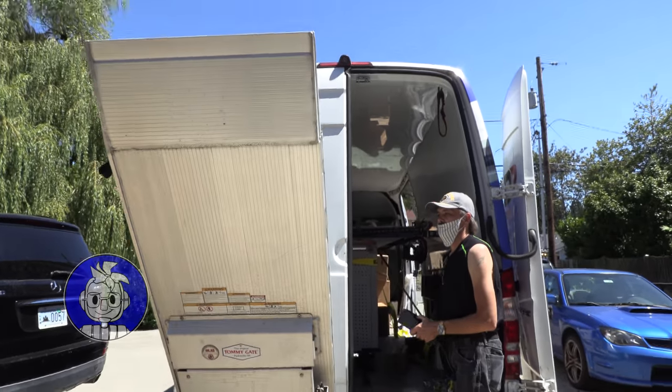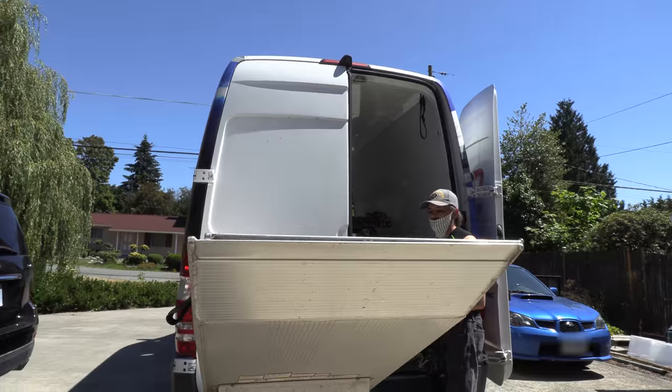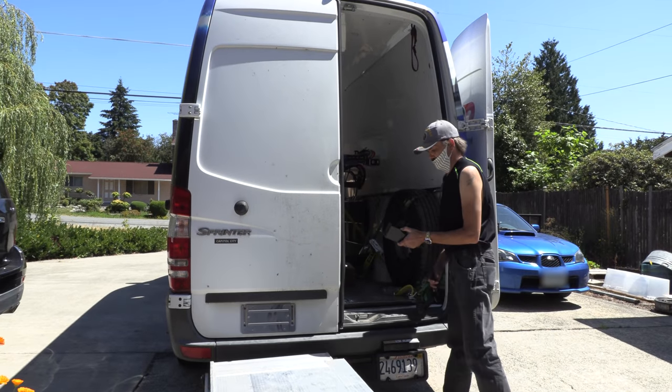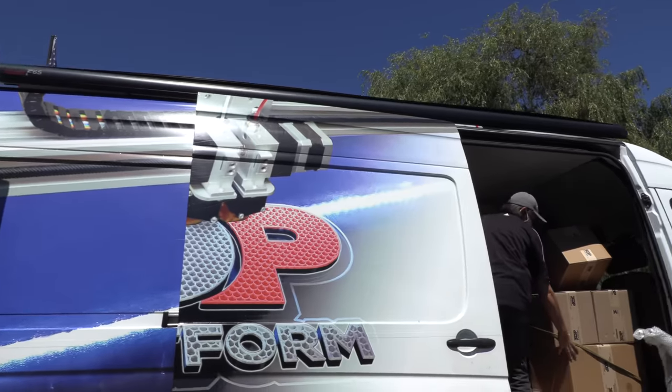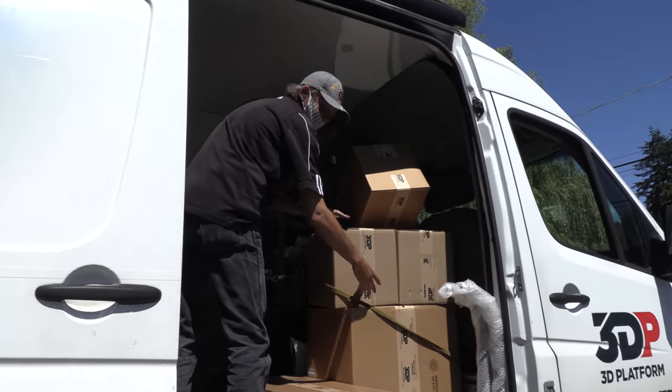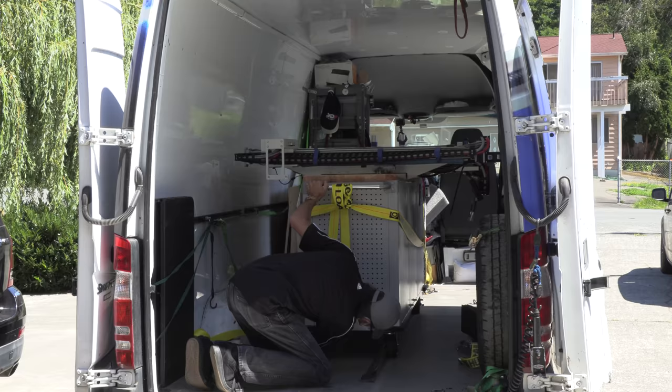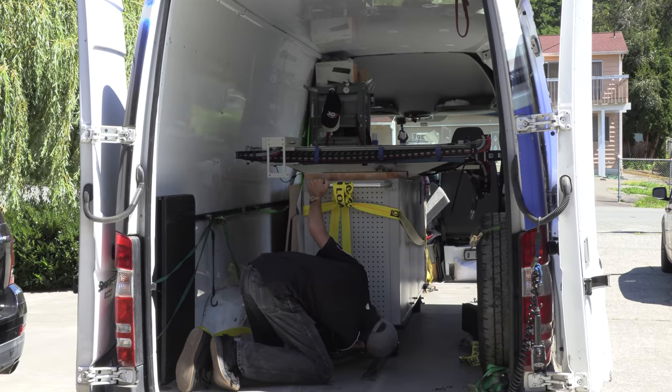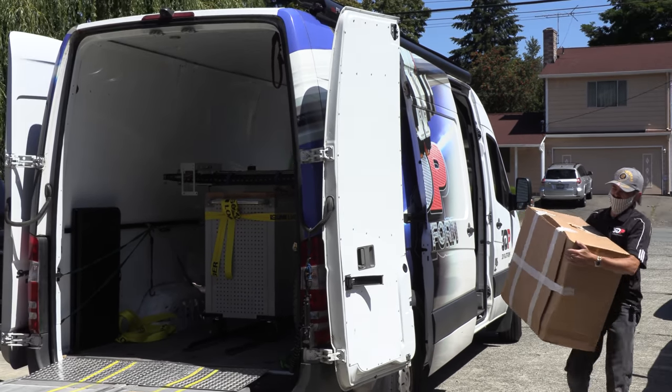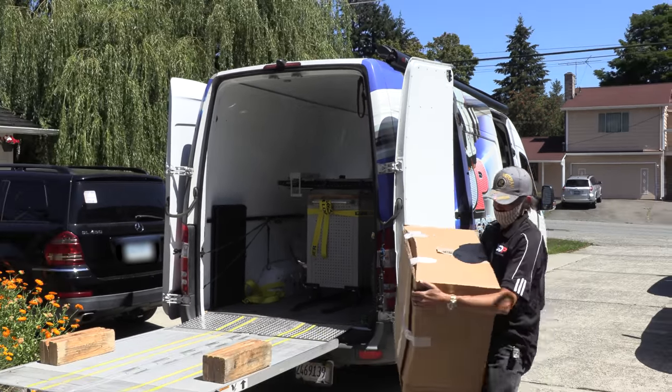The 300 series normally ships in a large crate and this was no exception. However, the shipping company didn't have a truck with a lift gate that could support the 2,000 pounds that everything weighed. So Don from 3D Platform unpacked the printer from the crate at the shipping facility and then used his van to bring it to my house.